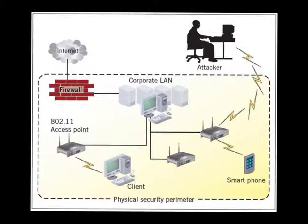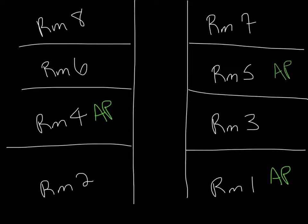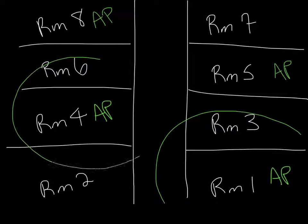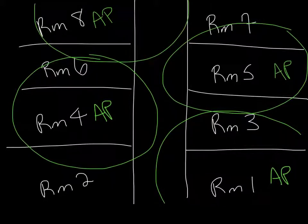Wireless networking, however, has many security issues. Hackers have found it easy to access wireless networks, so before you set up your wireless network, be sure you research security first. In this diagram of a building, access points are placed in rooms 1, 4, 5, and 8. Each access point covers a certain circumference, and we make sure those areas only mildly overlap — if they overlap too much, there can be interference.